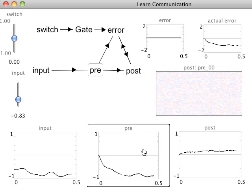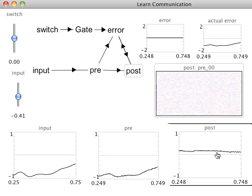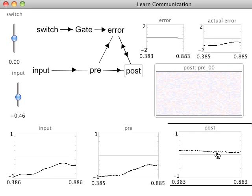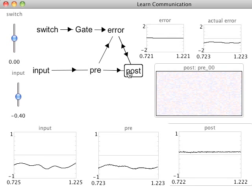Consequently, we will see there is no particular relationship between the pre-synaptic decoded value and the post-synaptic decoded value. The purpose of this circuit is to learn a communication channel between the pre- and post-synaptic populations.